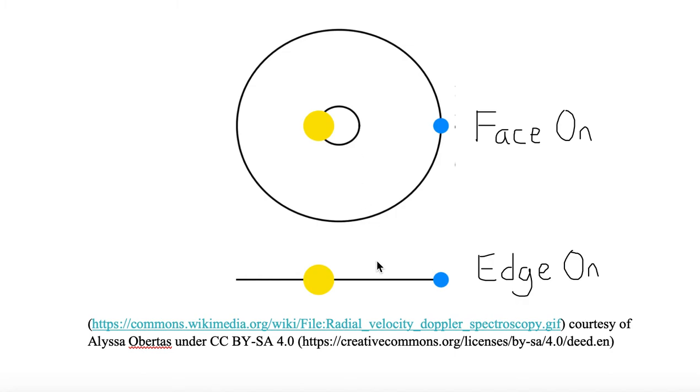Whereas the one below it is edge-on, we only see the plane of the orbit and we can see the blue star and the yellow star orbiting around each other along this plane.